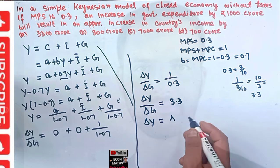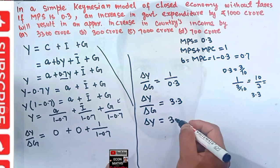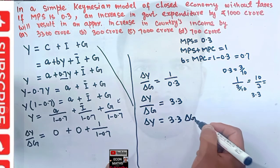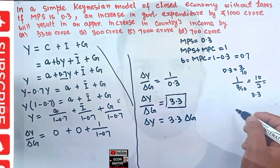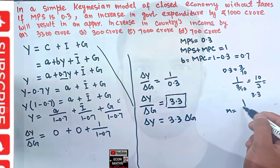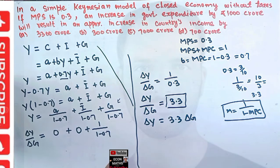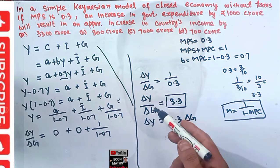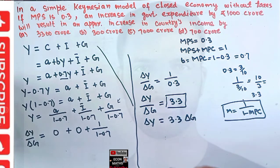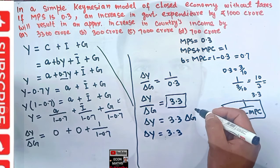This value of 3.3 is actually the expenditure multiplier. The government expenditure multiplier is given by 1 divided by (1 minus MPC). It shows by what factor income changes when there is a change in government expenditure. So delta Y = 3.3 times delta G.